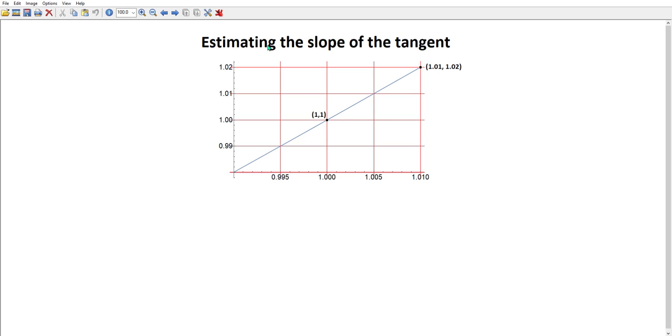And it looks like from the graph, (1.01, 1.02). We calculate the slope. And as you remember, the slope of a line is change in y over change in x.